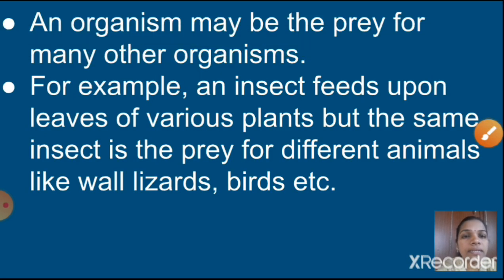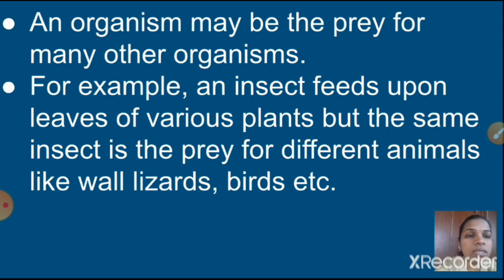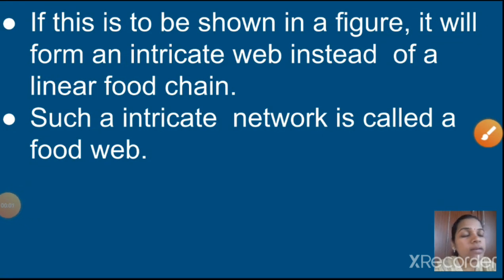An organism may be the prey for many other organisms. For example, an insect feeds upon leaves of various plants, but the same insect is the prey for different animals like wild lizards, birds, etc. So if this is shown in a figure, it will form an intricate web instead of a linear food chain.